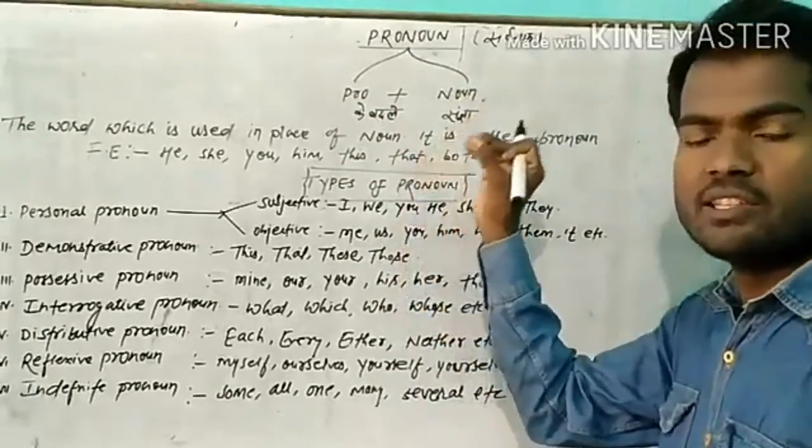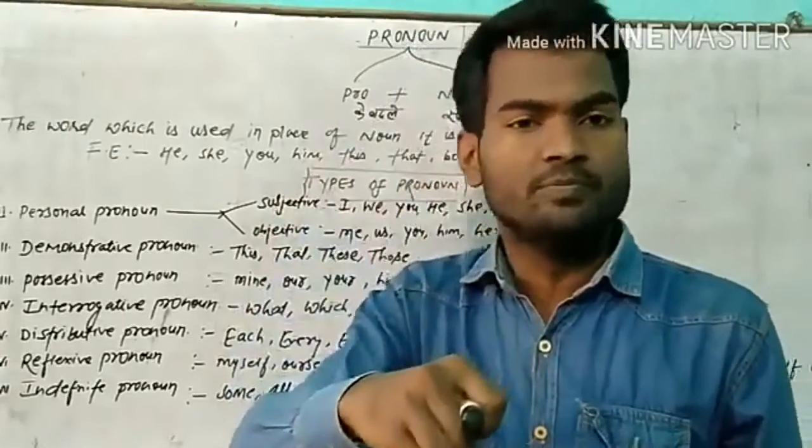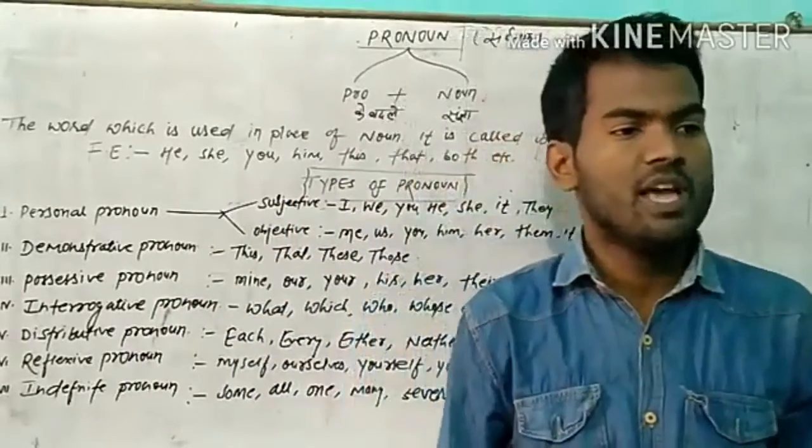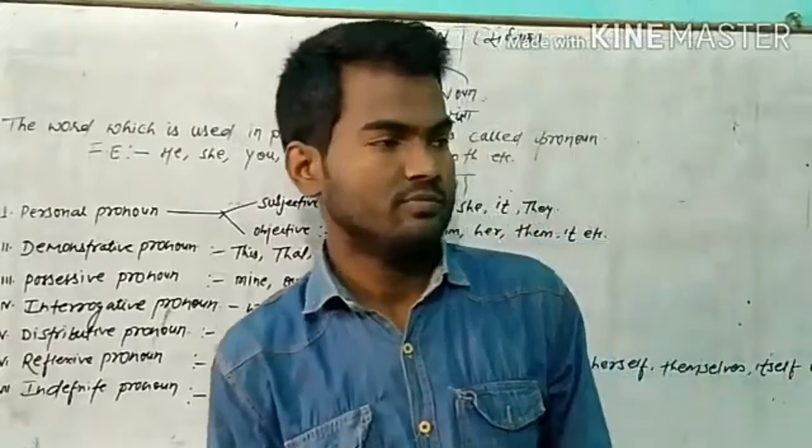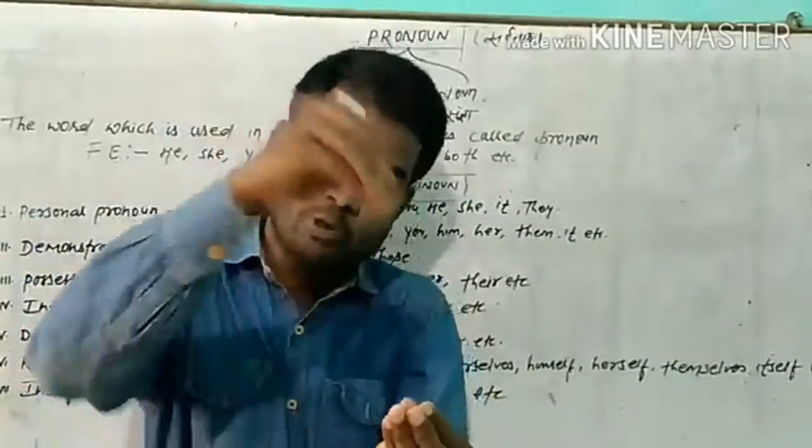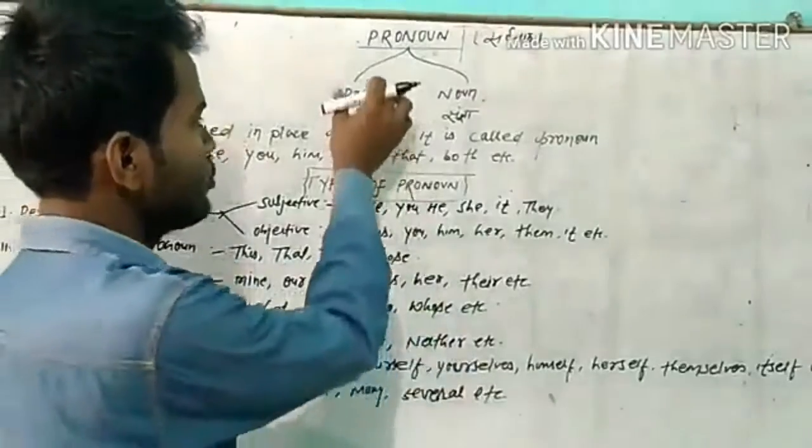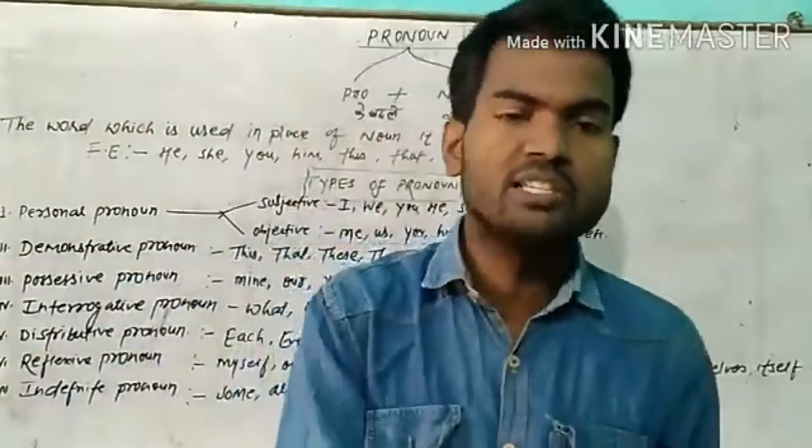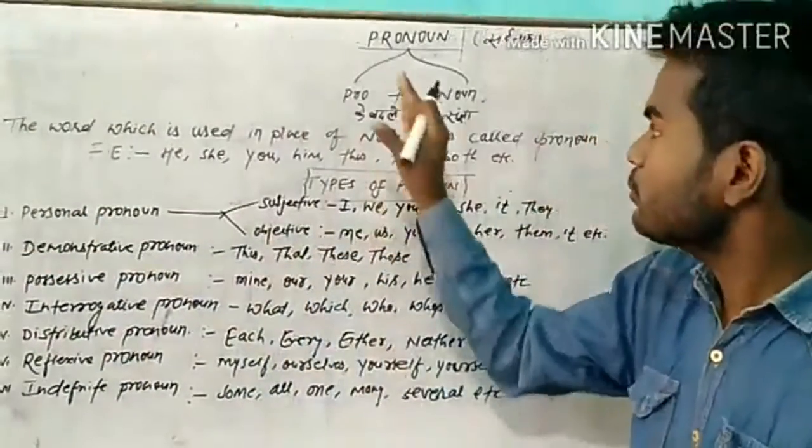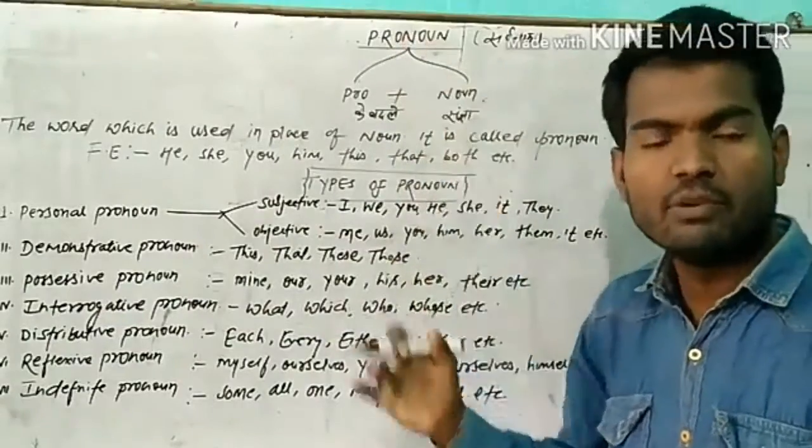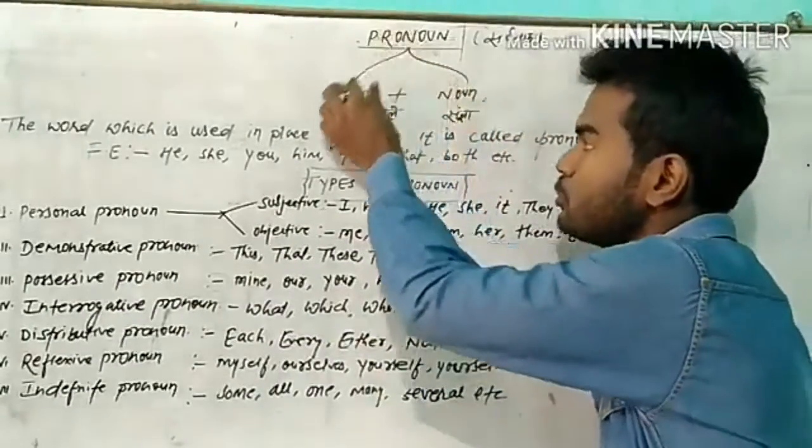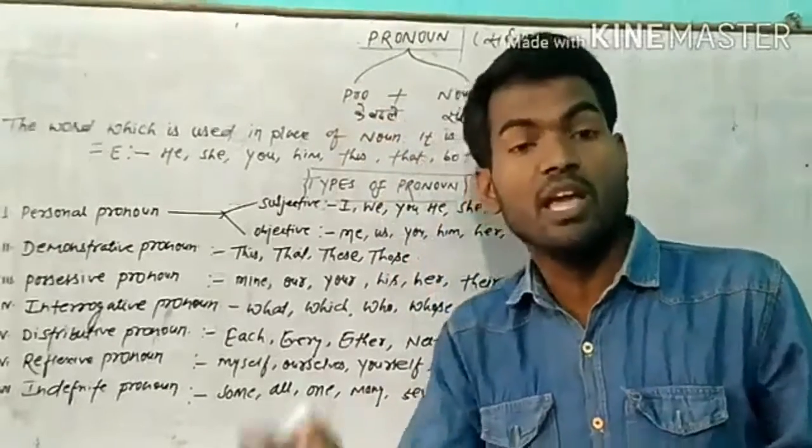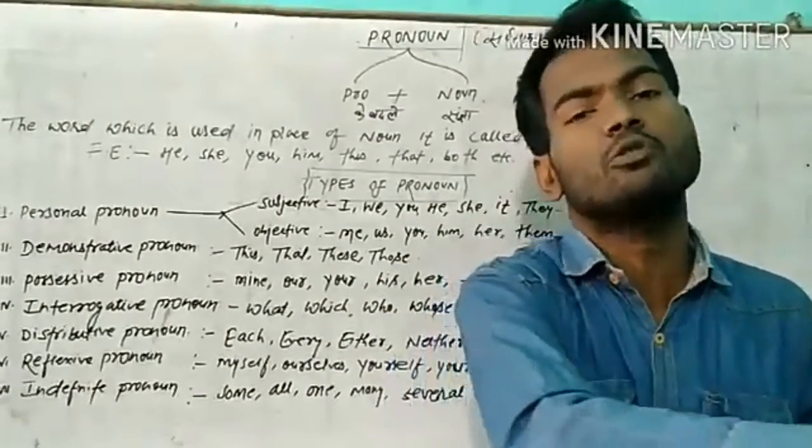اس کا مطلب ہوتا کیا ہے? کہ sangya کے بدلے میں آنے والے سبد جو پریوک کیے جاتے ہیں, اسی کو سرونام کہتے ہیں. Sangya کے بدلے میں آنے والے سبدوں کو, which are used in place of sangya, اسی کو pronoun کہتے ہیں. Pro means ke badly, noun means sangya.